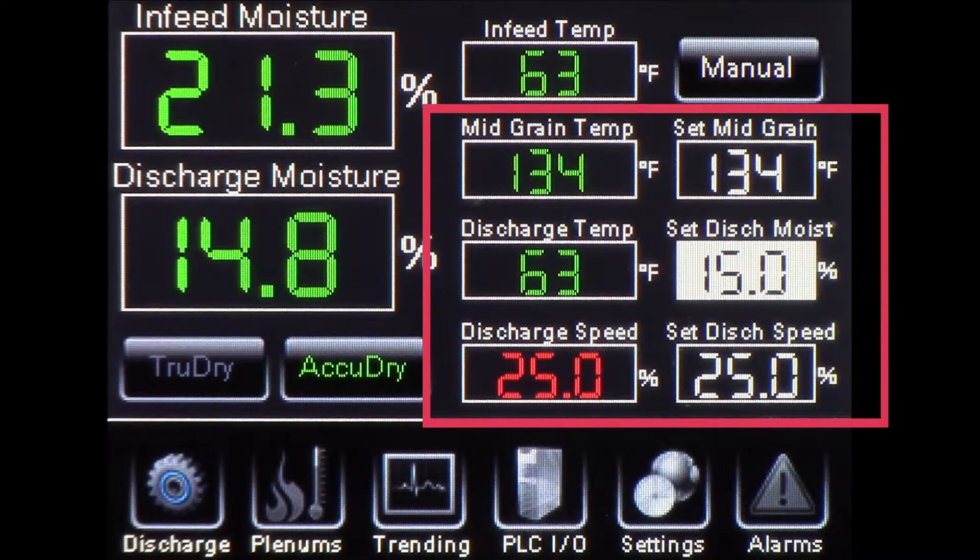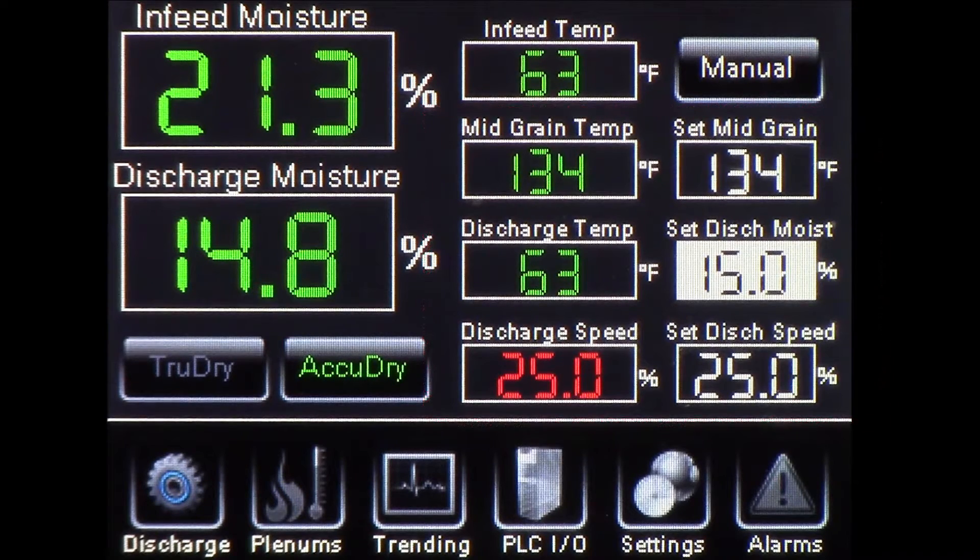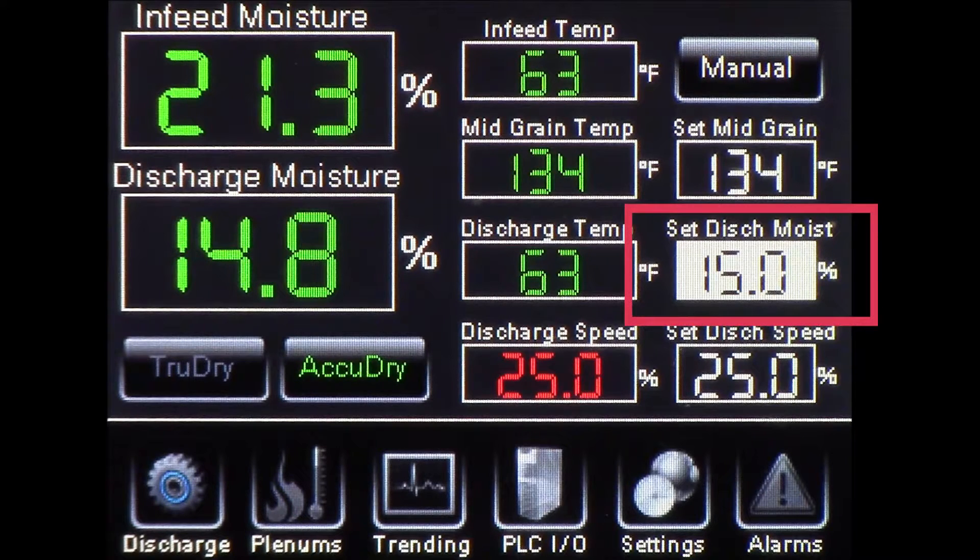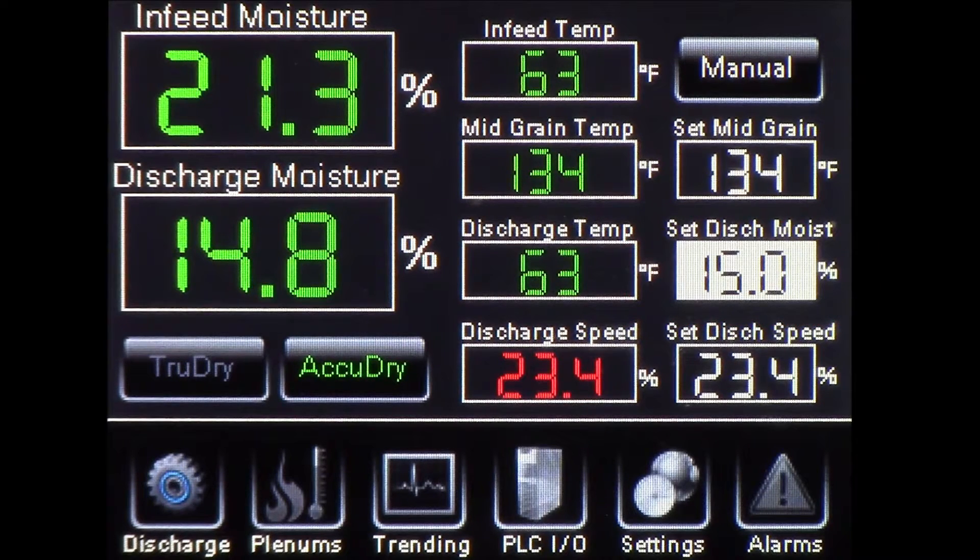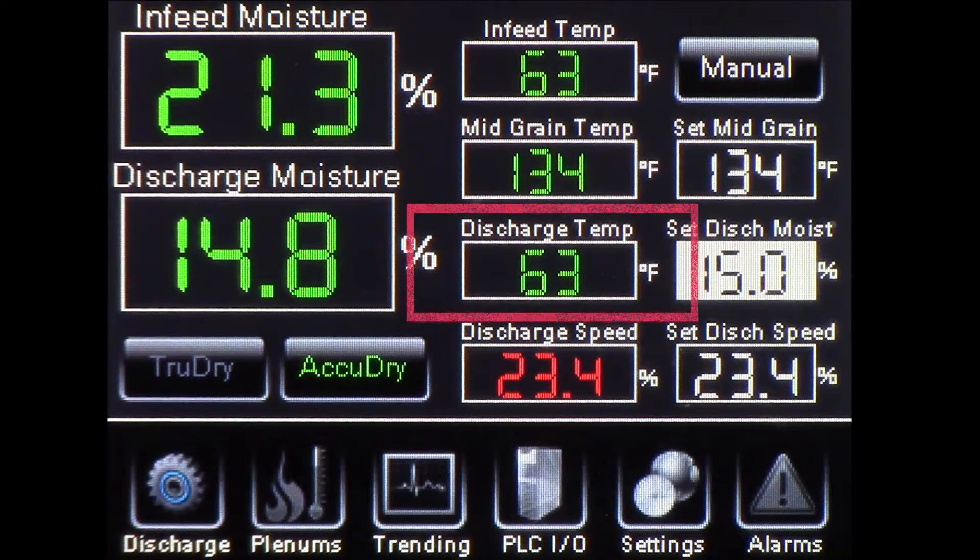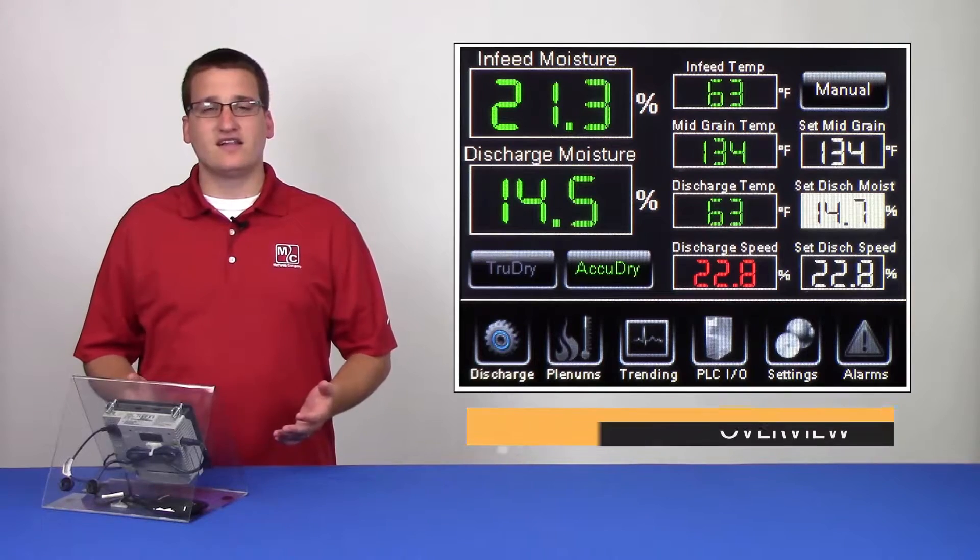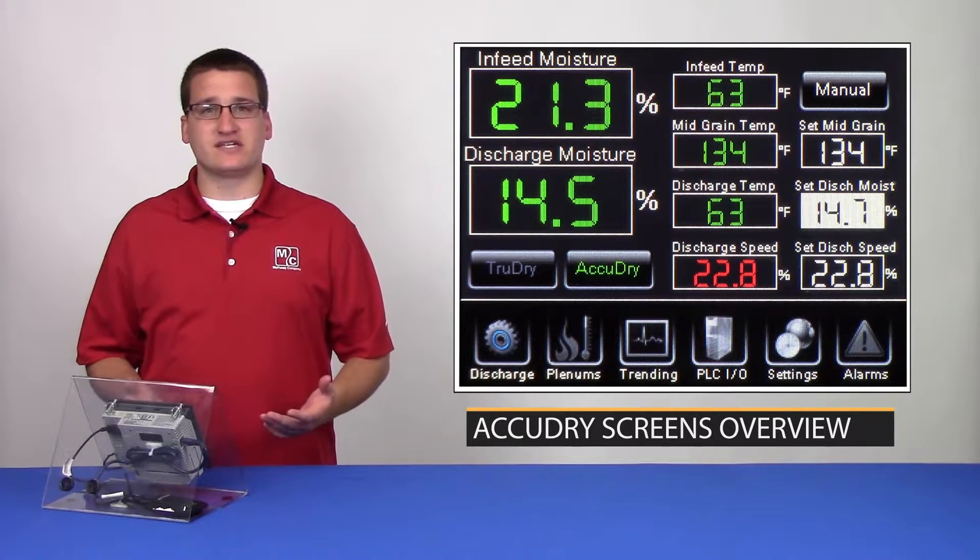There will be many values showing on each screen, some of which are read-only and some that can be adjusted by the user. Exactly which values can be adjusted will change depending on the operating mode of the dryer, but in general, a white background indicates a value that can be adjusted, while a black background indicates a read-only value. Let's take a closer look at each of the six chapters.